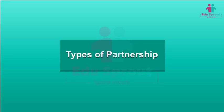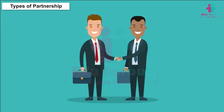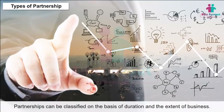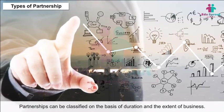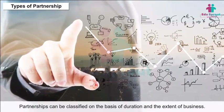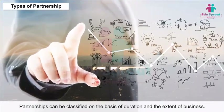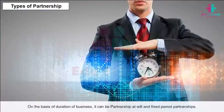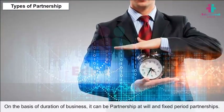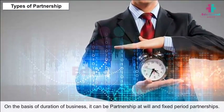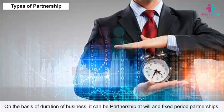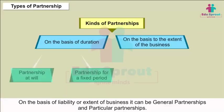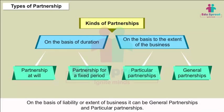Types of Partnerships: Partnerships can be classified on the basis of duration and extent of business. On the basis of duration, it can be a partnership at will or a fixed period partnership. On the basis of liability or extent of business, it can be a general partnership or a particular partnership.